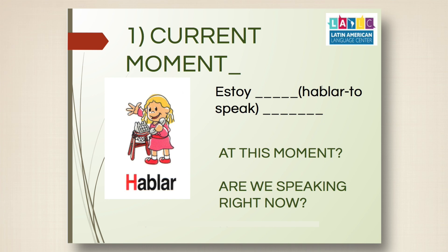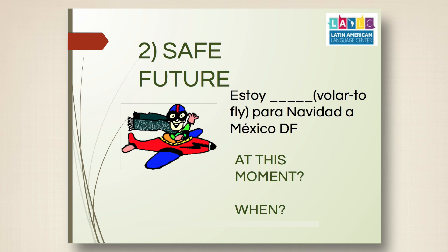So if your mom calls you and asks what you're doing, you say 'I'm working, Mom, I'll call you later.' That's exactly what you're doing at that moment. That's the first use: what you're doing literally right now.